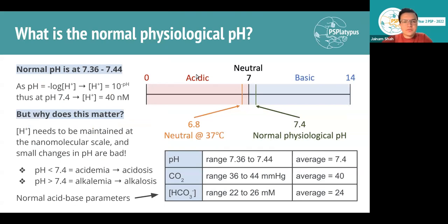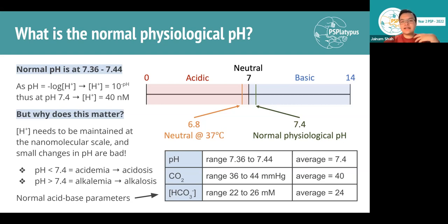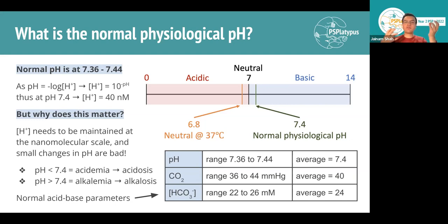Starting with some basic principles from first year — what is the normal physiological pH within our body? The main difference between physiological pH and neutral pH is that neutral pH is where HCO3 minus ions balance out with H plus ions, happening at about 6.8 at 37 degrees Celsius. The normal physiological body pH is actually around 7.4, with a range of 7.36 to 7.44. For calculations, 7.4 will suffice.